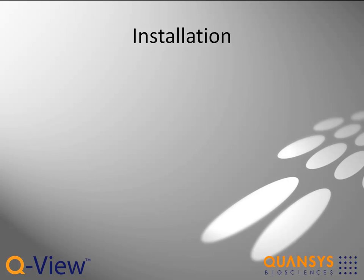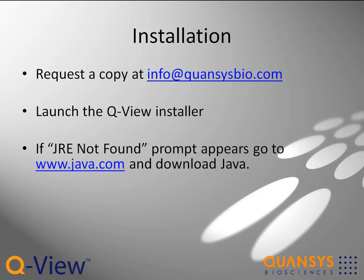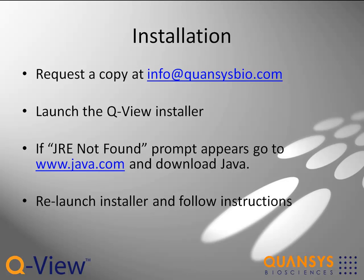If you don't have the QView application installer, please talk to your Kwanzaa sales representative or request a free copy from info at kwanzasbio.com. Launch the QView installer and follow the instructions. If a JRE not found prompt appears, go to www.java.com to install the latest 32-bit version of Java, then relaunch the QView installer.